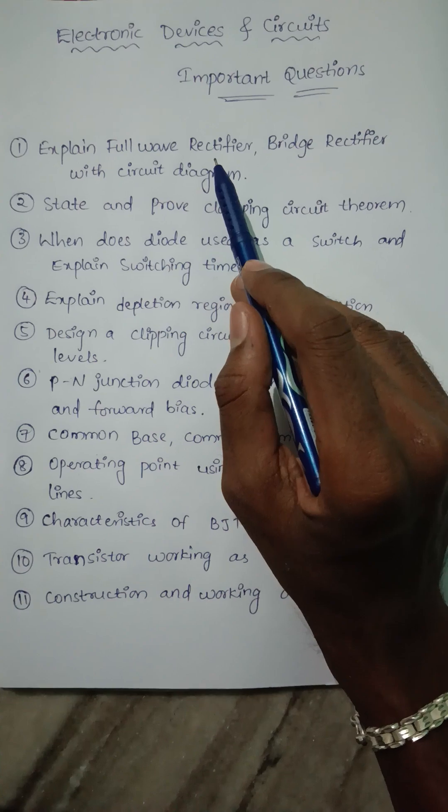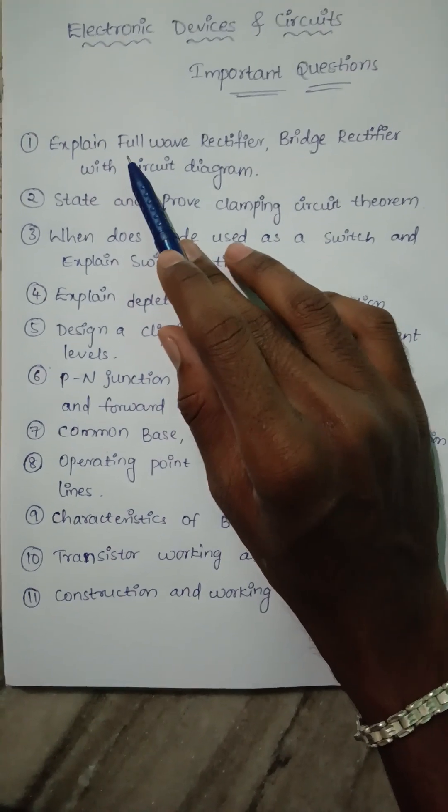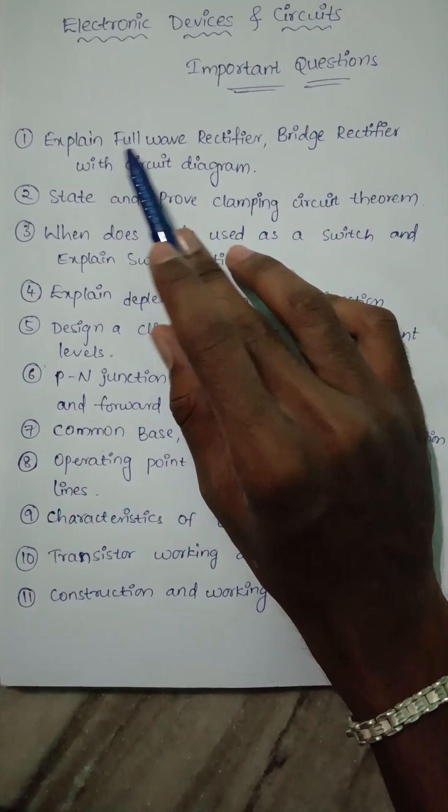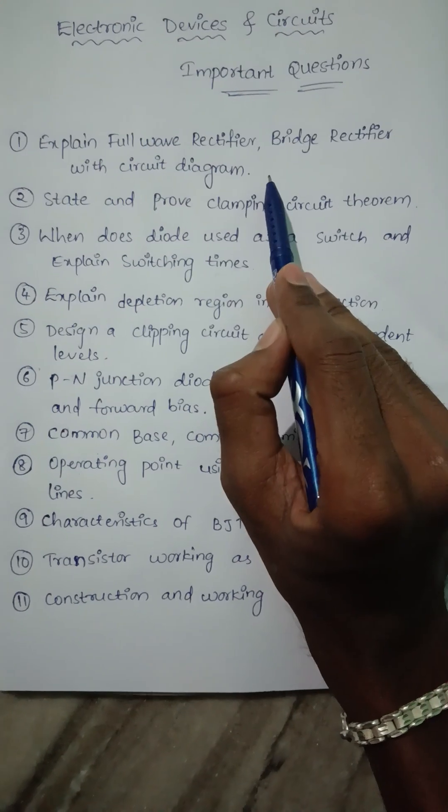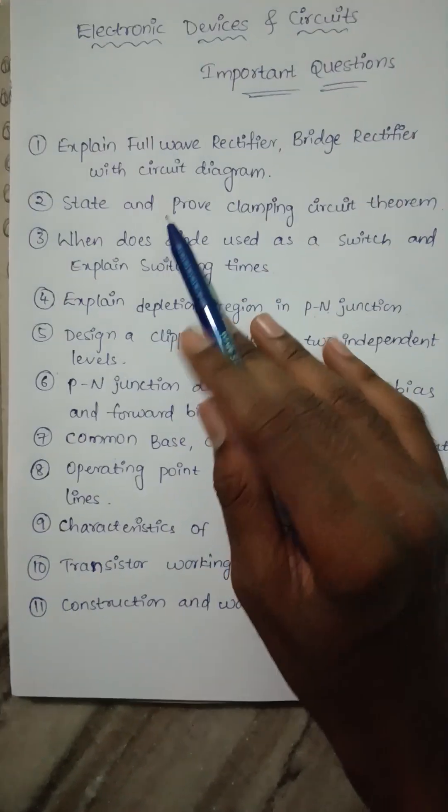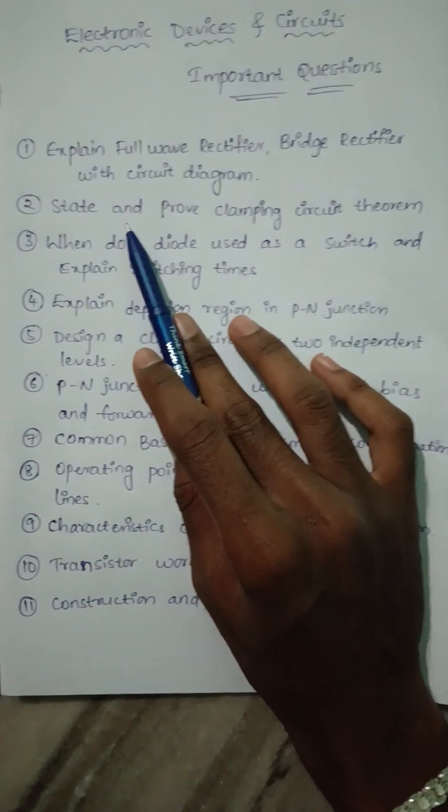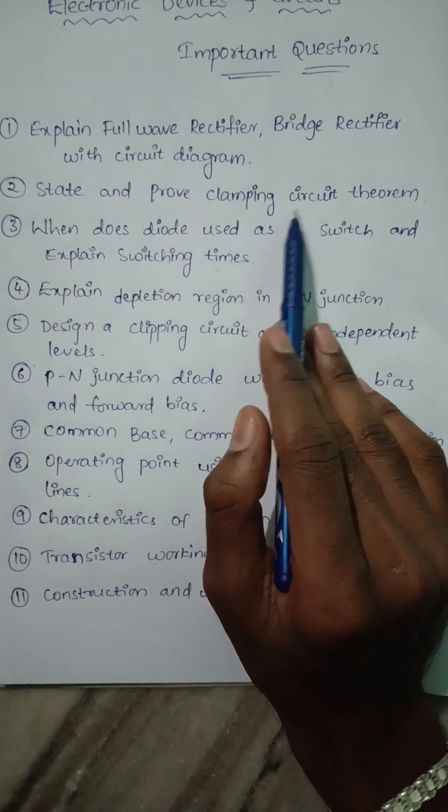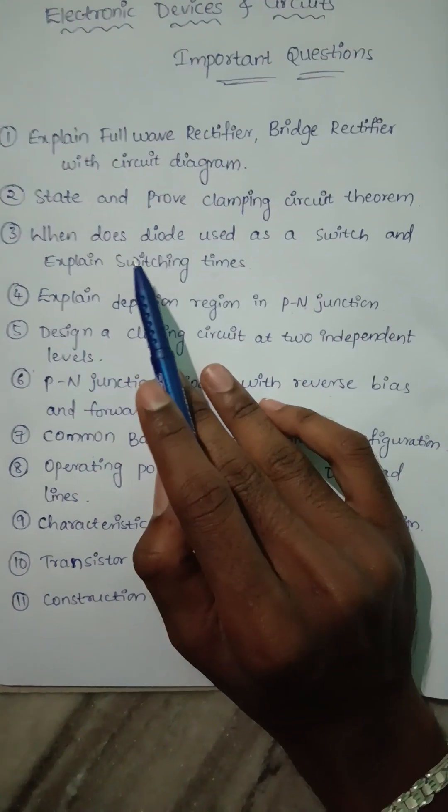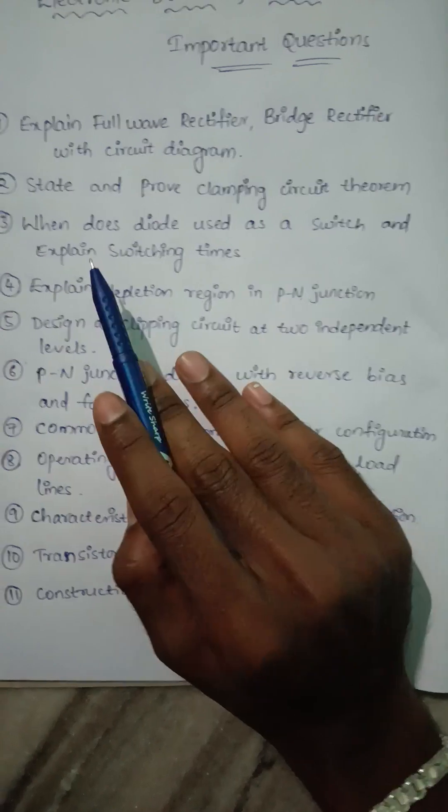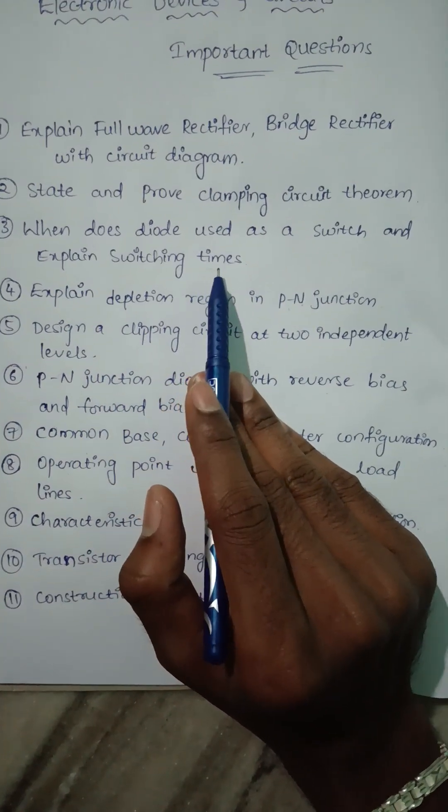Now we are going into the first unit. The main important questions are: explain full wave rectifier and bridge rectifier with circuit diagram; state and prove clamping circuit theorem; and when is diode used as a switch and explain its switching times.